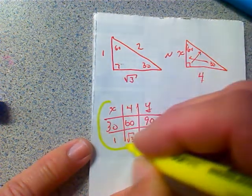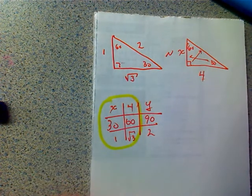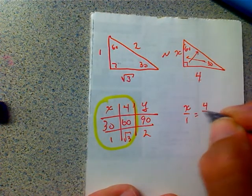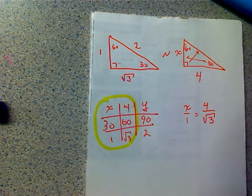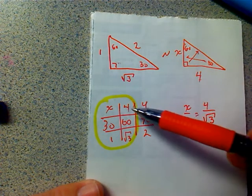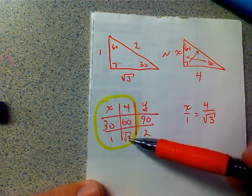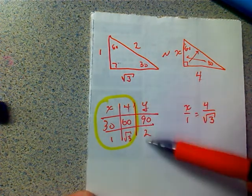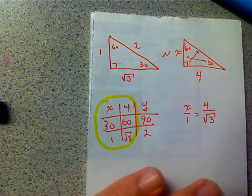And what that tells me is that x over 1 equals 4 over square root of 3. Now you say, coach, how do I know which ones to use? Well, you have to use the one that has numbers in both spots as one of the choices. Then if you want to find x, pick that one. If you want to find y, pick that one. We're going to do them both.